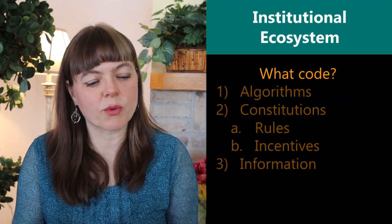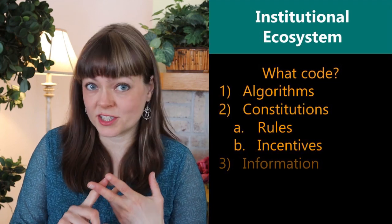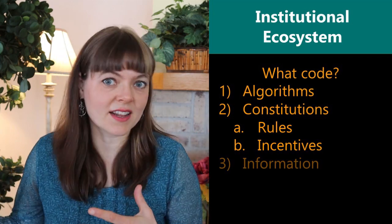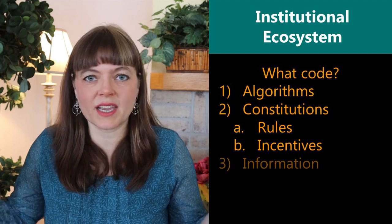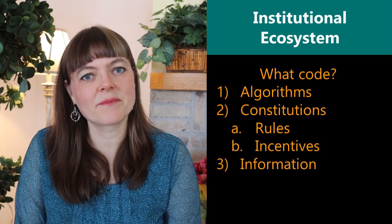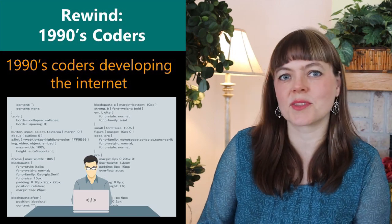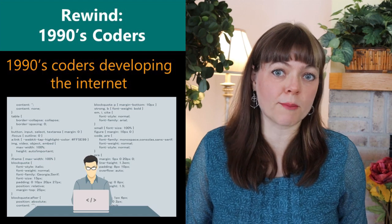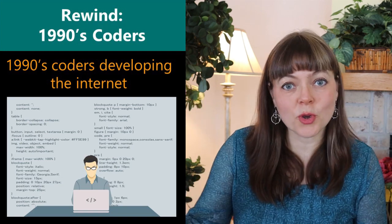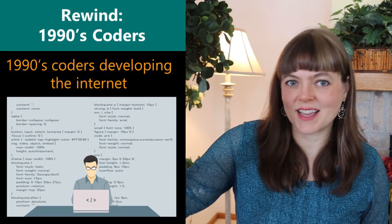Code can include really anything that would be written on a blockchain — things like algorithms and constitutions, like the rules that make up roles and incentives within an institution, and it can include just plain information of any type. To think about code as DNA, I think it is helpful to rewind to the late 1990s, early 2000s, when you had computer programmers who were developing the internet, creating code that would show you websites, create a user interface, and allow you to purchase things from the website.